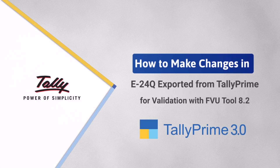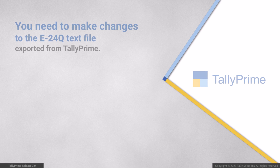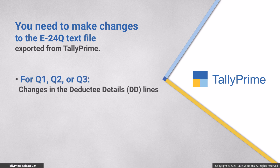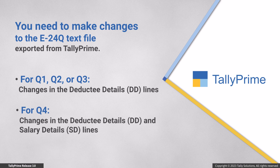Welcome to Tally Help Videos. In this video, you will learn the process of making changes in the E24Q text file exported from Tally Prime, so that you can successfully validate it with FVU tool 8.2. Once you export the E24Q text file from Tally Prime, you need to make changes to the deductee details for the first three quarters of the financial year, and to the deductee details and salary details lines for the fourth quarter of the financial year.